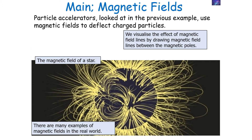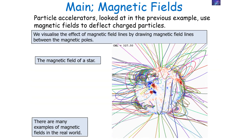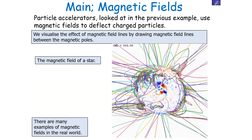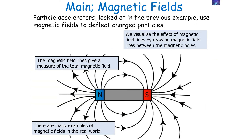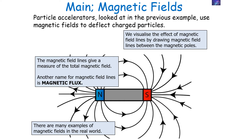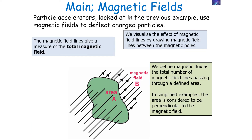For example, you have a magnetic field of a star, which is shown in the following examples. It's important to note that the magnetic field lines of a magnet give a measure of the total magnetic field. Another name for the magnetic field lines is magnetic flux. So the magnetic field lines give us a measure of the total magnetic field. We can define magnetic flux as the total number of magnetic field lines passing through a defined area.